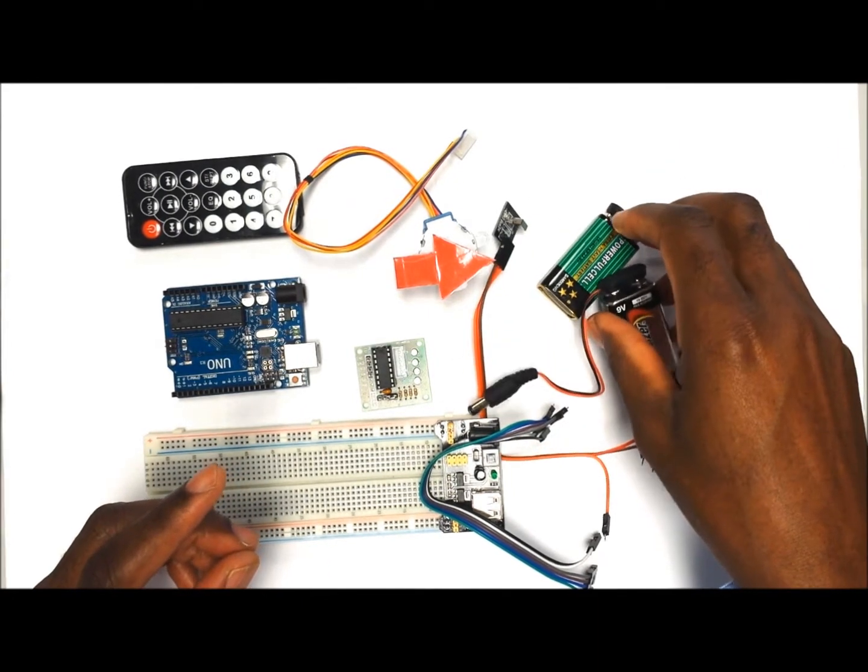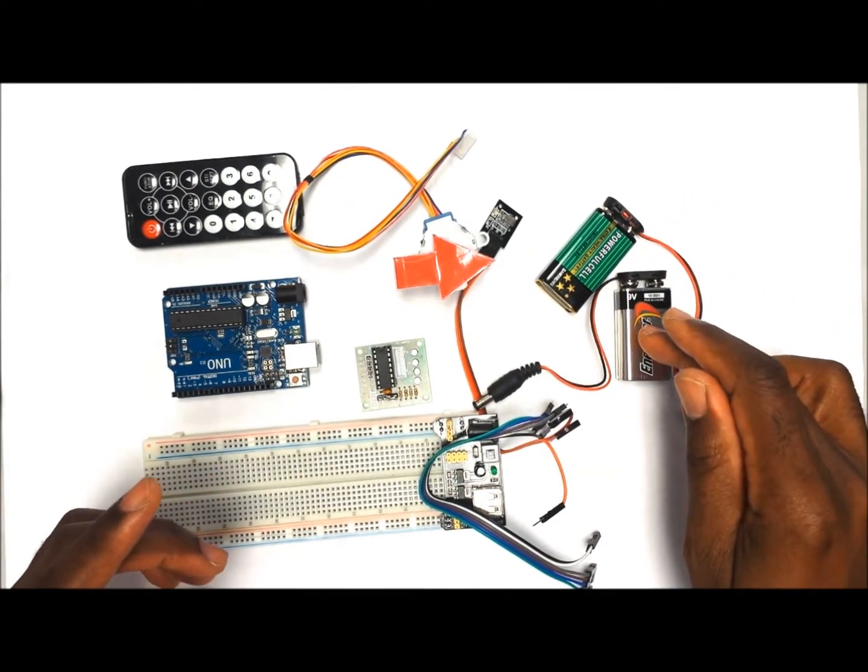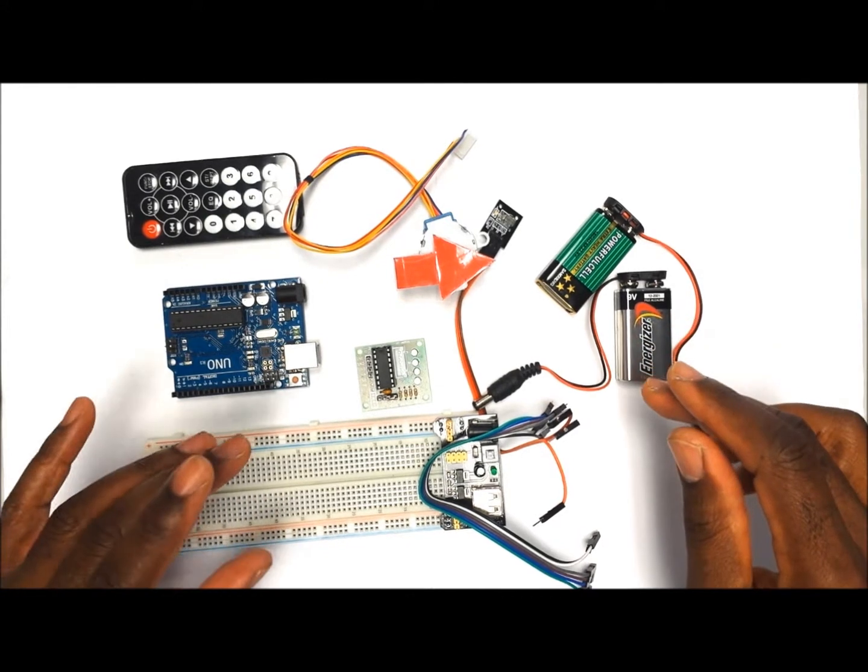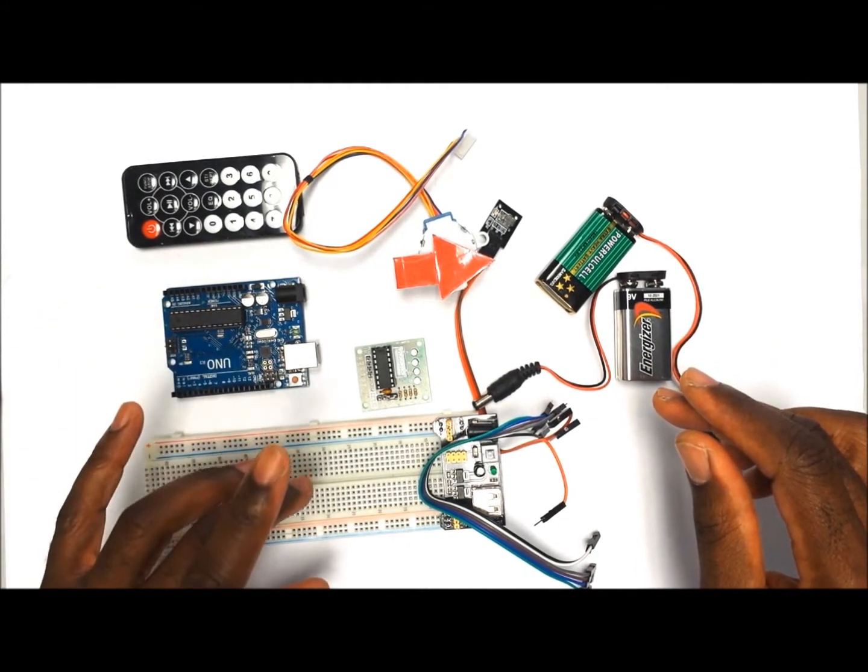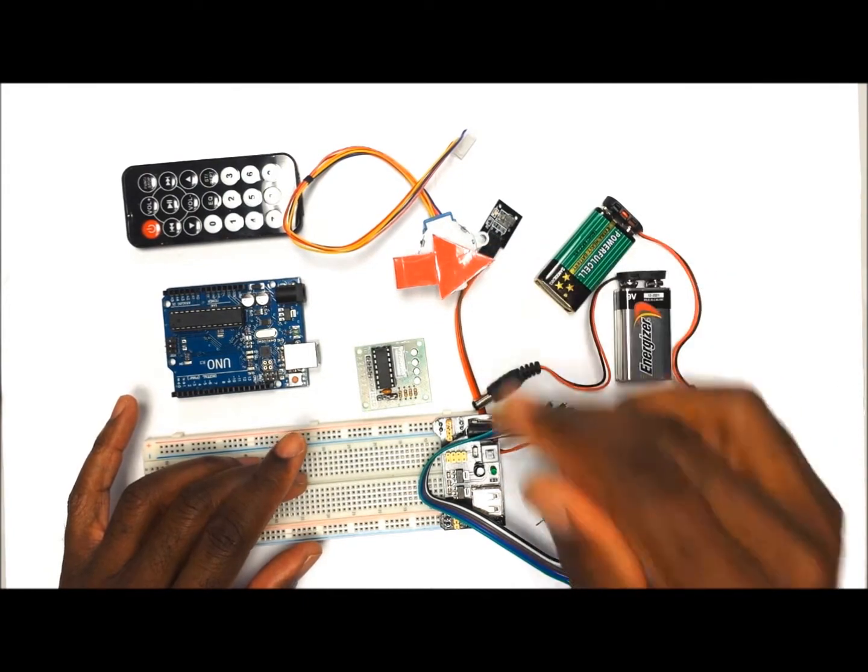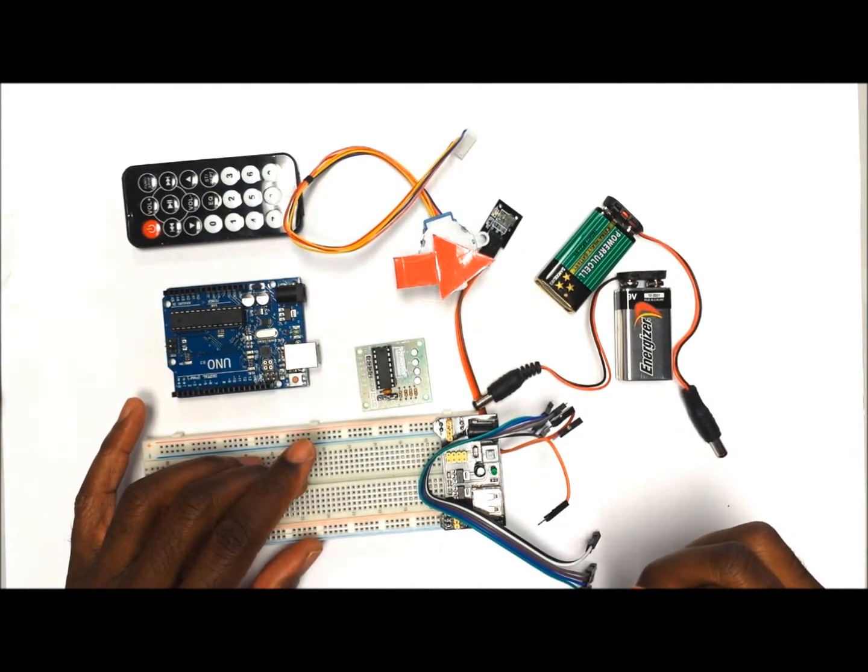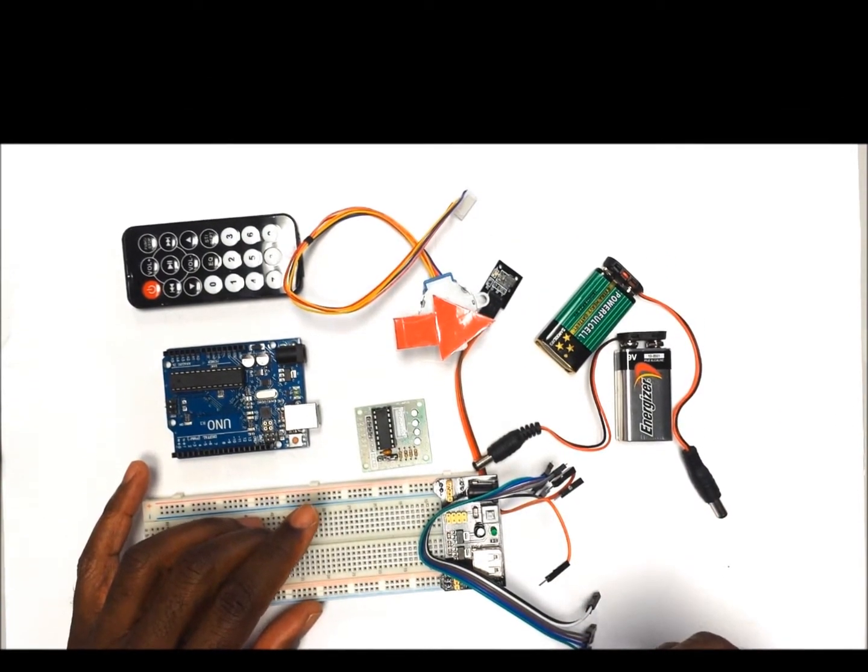In this particular project, we want to use one 9-volt battery to power the Arduino and the breadboard, and the other 9-volt battery to power the stepper motor itself because it requires a lot of power.